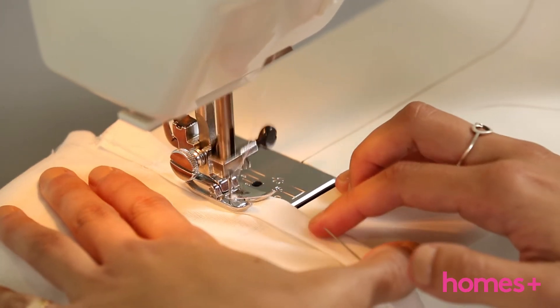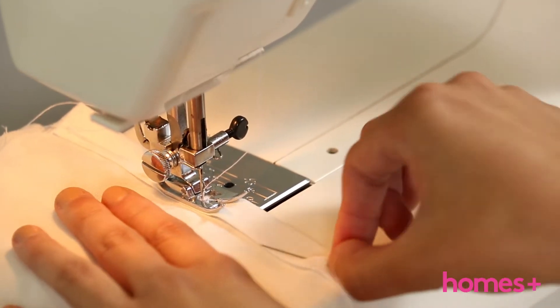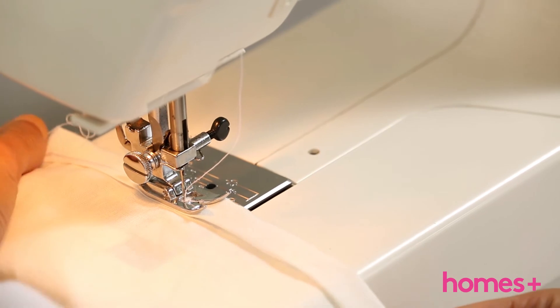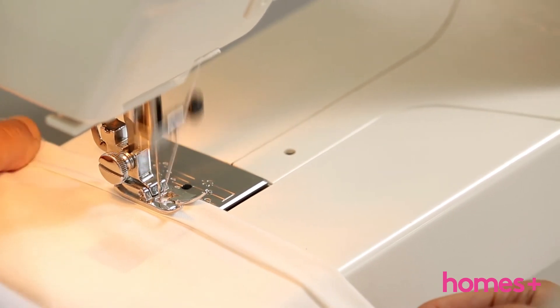Step 4. Sew along the bottom of the folded hem as close to the edge as possible, leaving a gap at both ends for the ribbon to thread through.